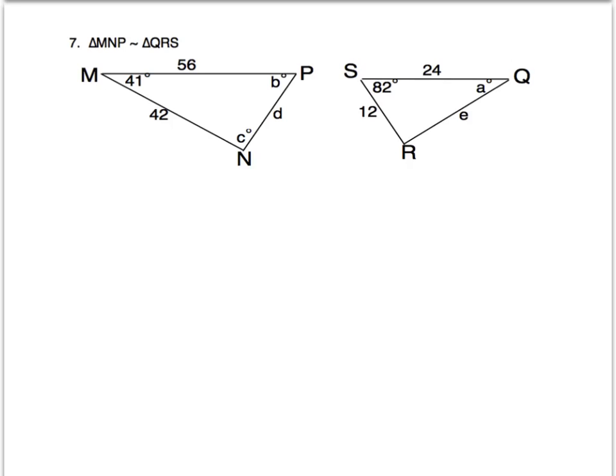So let's take a look at angles first. We're given that triangle MNP is similar to triangle QRS. And that word similar means, in terms of triangles at least, that angles are congruent and sides are proportional.